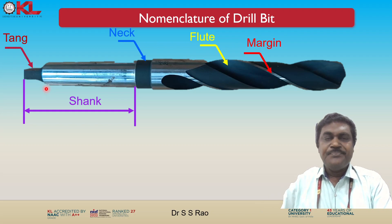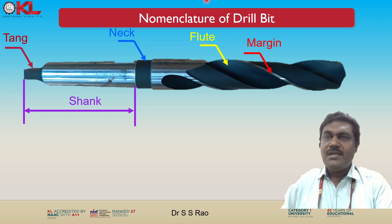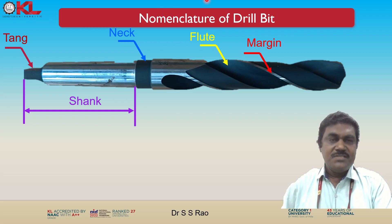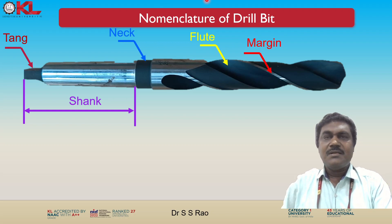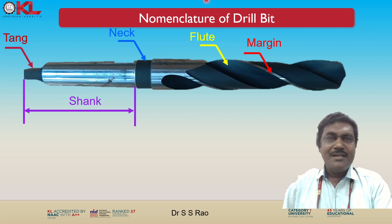Next we see the shank. The shank is the straight cylindrical part of the drill bit that fits into the drill's chuck. It is the part that gets gripped by the drill's jaws to rotate the drill bit during the drilling operation.